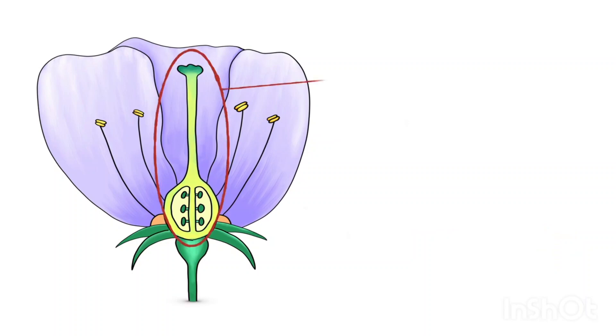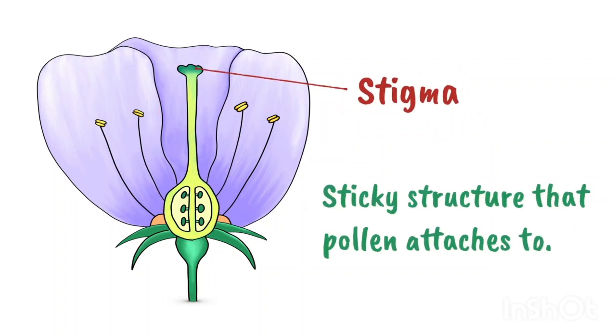This central structure is called the carpal and this is the female part. At the top of the carpal is the stigma. This is a sticky structure that pollen attaches to.